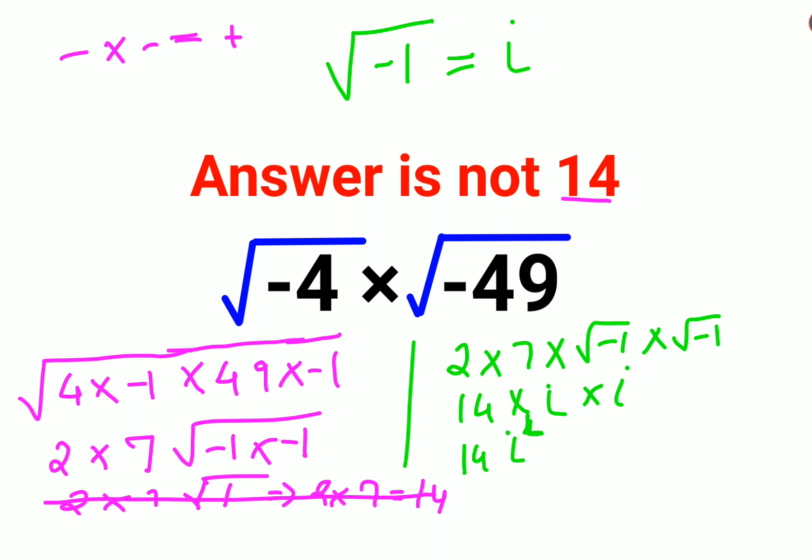Now i², if I want to find the value of i², I need to square this equation. So √(-1) the whole square equals i², that is nothing but i² value comes out to be -1. So this eventually becomes 14×(-1).